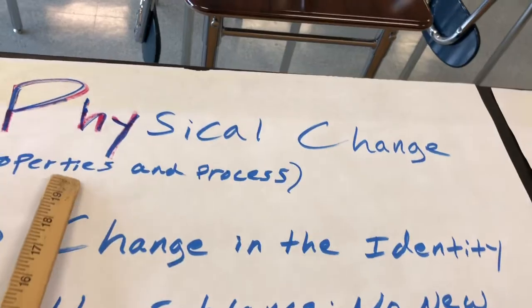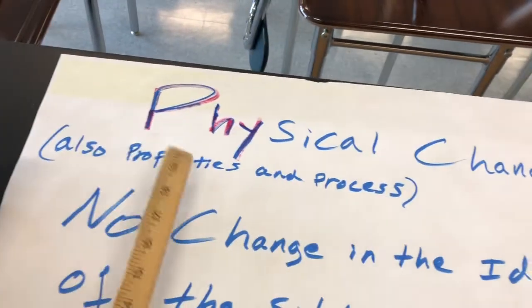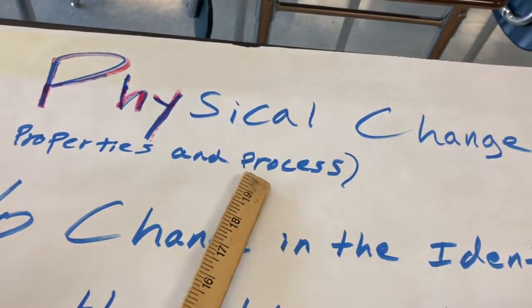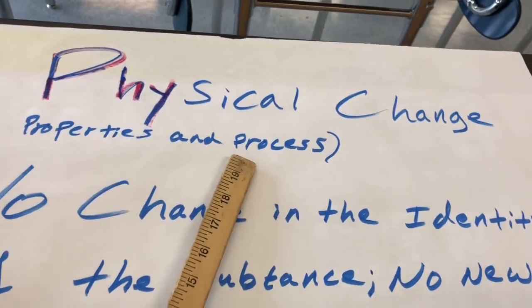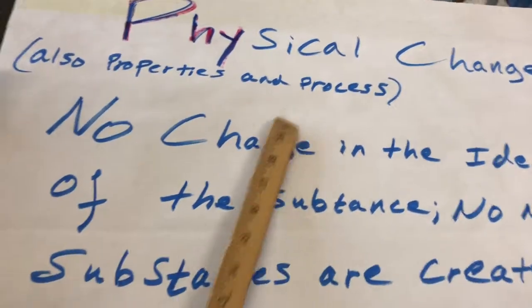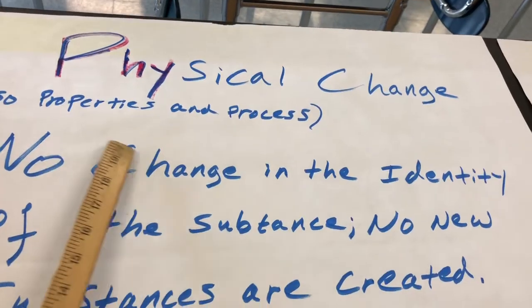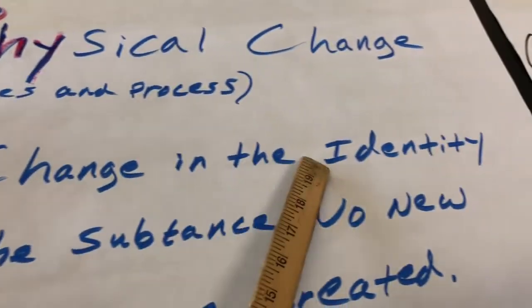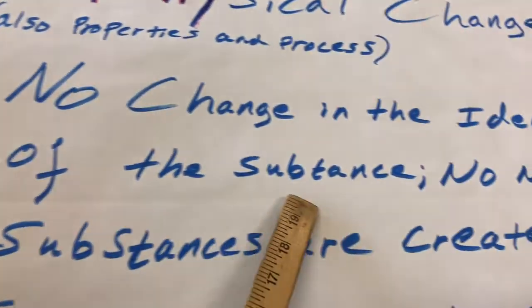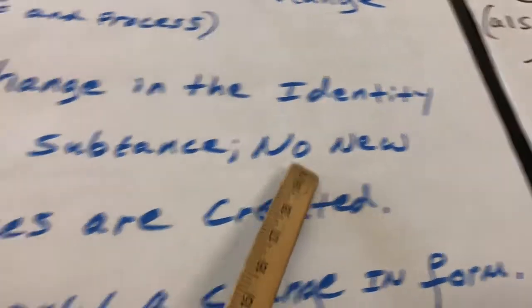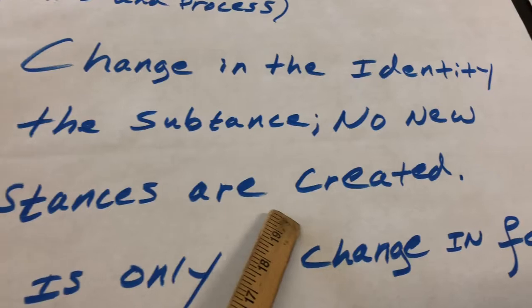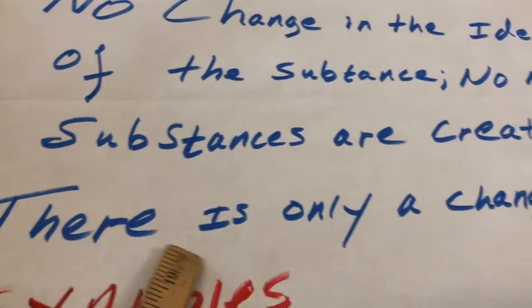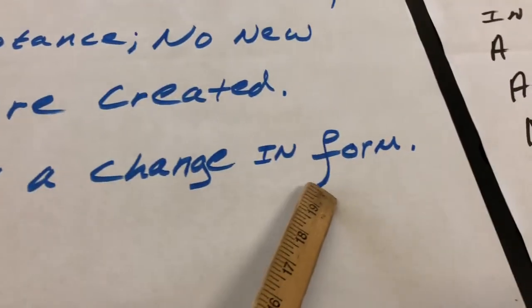Physical changes or physical properties or physical process all follow the same set of rules. In a physical change or physical process, there will be no change in the identity of the substance. There's going to be no new substances that are going to be created. There's only going to be a change in form.